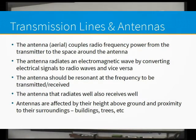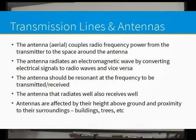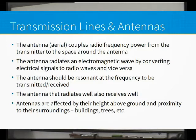The antenna couples the radio frequency power from the transmitter to the space around the antenna - that's the magic bit. The antenna radiates an electromagnetic wave by converting electrical signals from your transmitter into electromagnetic waves. The antenna should be resonant or tuned to the frequency you want to receive and transmit on. There's a thing called reciprocity - if it receives well, it'll also transmit well.